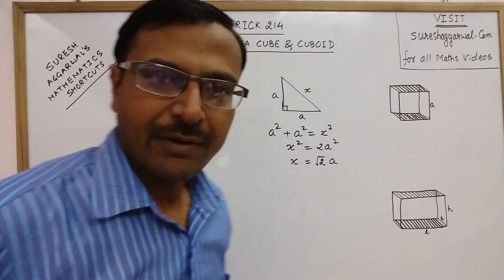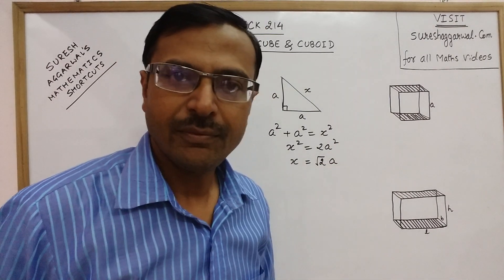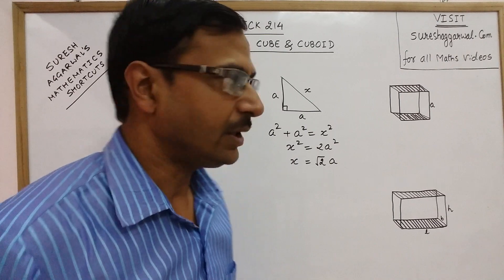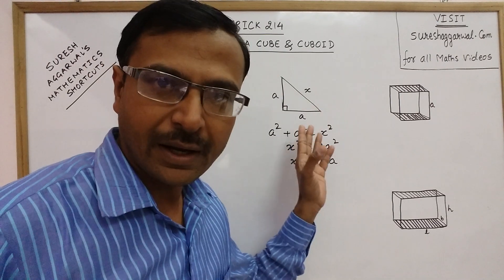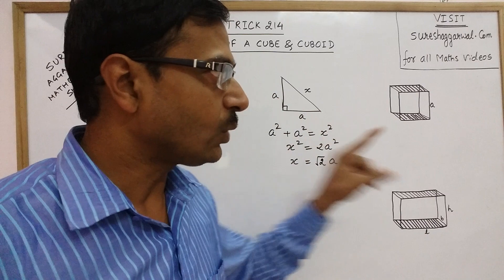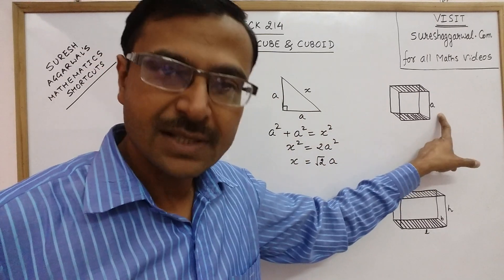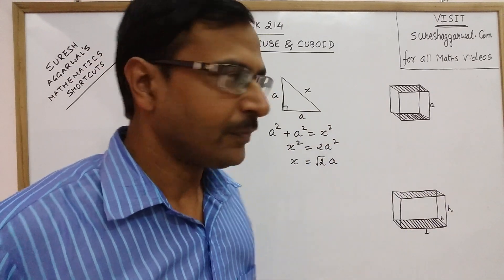I have applied Pythagoras theorem and found out the hypotenuse of a right-angled triangle whose base and perpendicular are equal to the side of the cube.